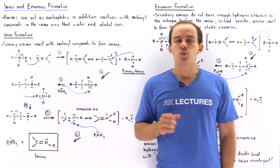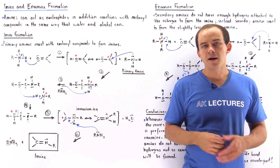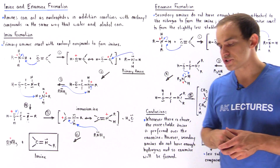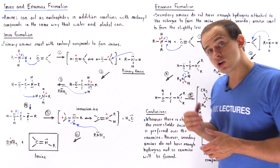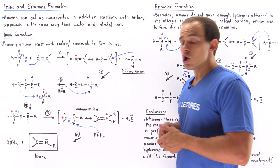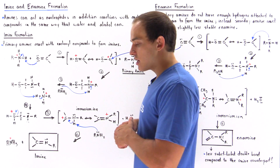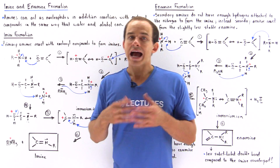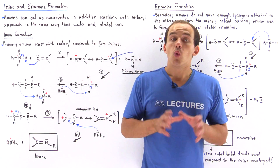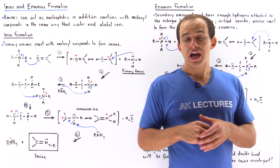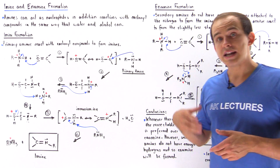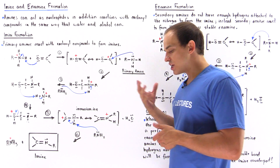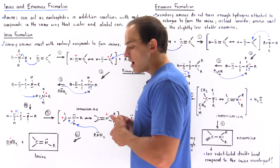When water reacts with carbonyl compounds, we produce hydrates. When alcohol reacts with carbonyl compounds, we produce acetals. What happens, however, when an amine reacts with a carbonyl compound?